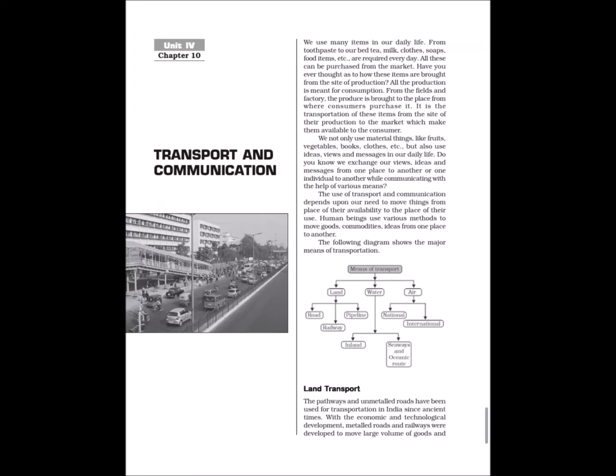Chapter 10: Transport and Communication. We use many items in our daily life — from toothpaste to bed tea, milk, clothes, soaps, food items, etc. — which are required every day. All these can be purchased from the market. Have you ever thought about how these items are brought from the site of production? All production is meant for consumption. From the fields and factory, the produce is brought to the place where consumers purchase it. It is the transportation of these items from the site of production to the market which makes them available to the consumer.